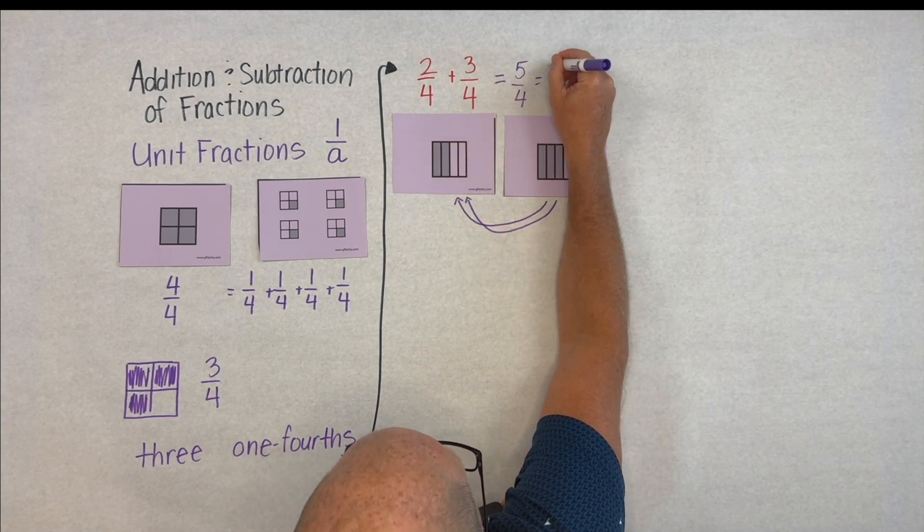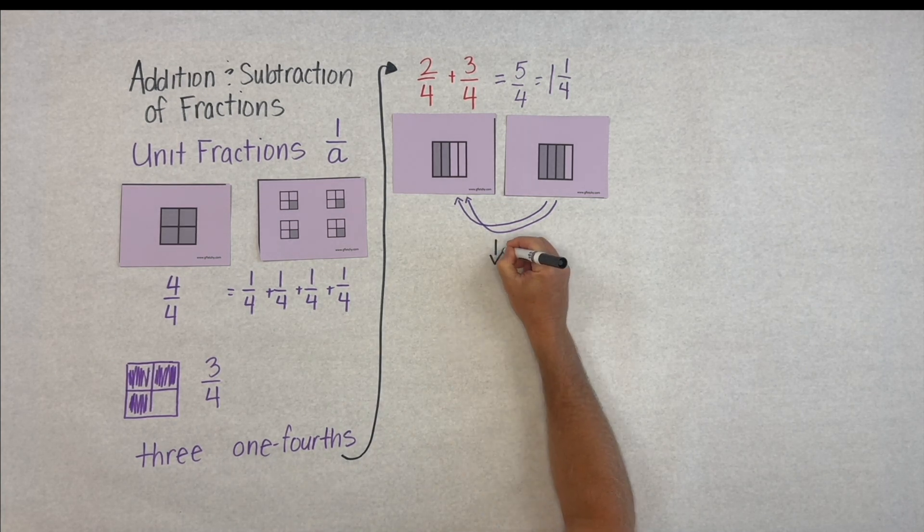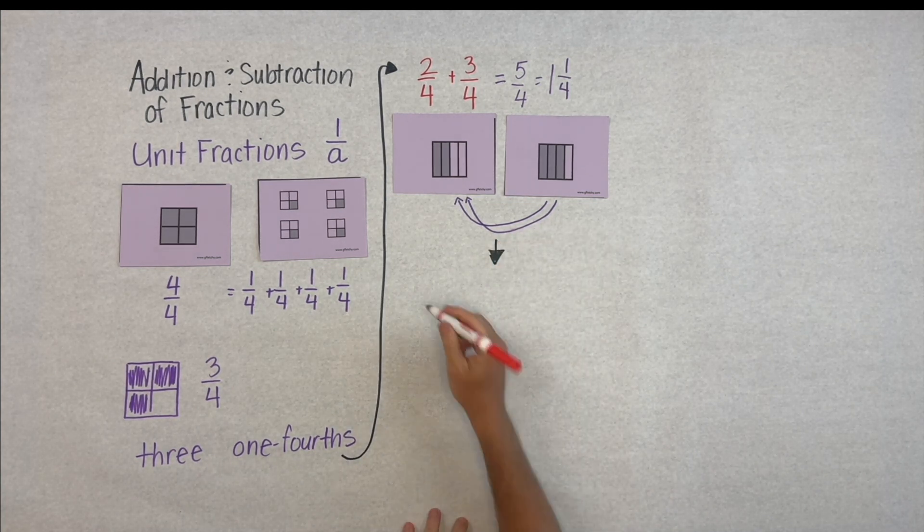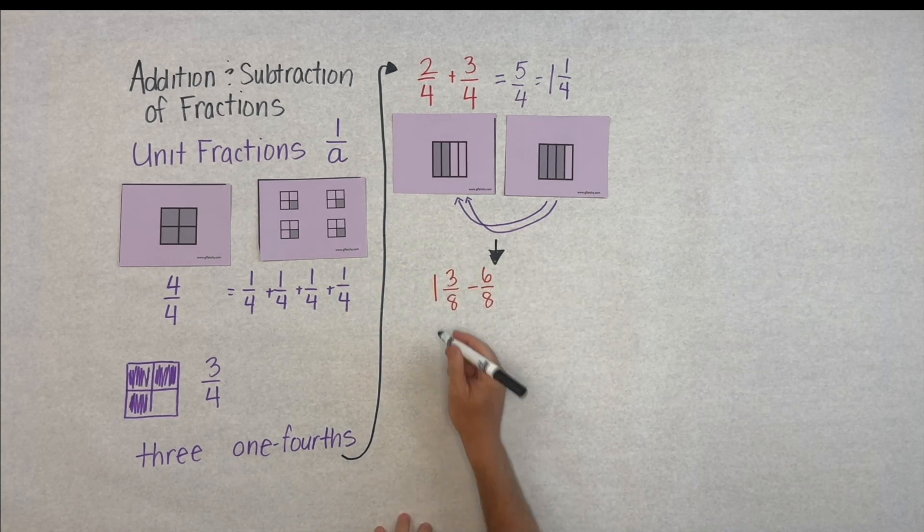Here we'll take two-fourths from our three-fourths, give it to our two-fourths to make a whole, and we're left with one and one-fourth or five one-fourths. This understanding also works with subtraction.